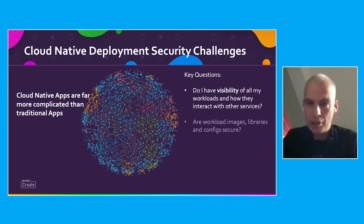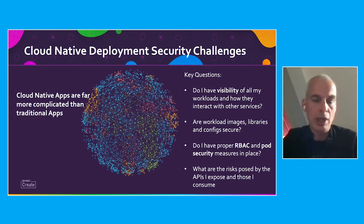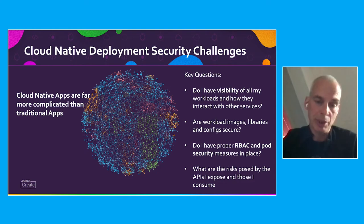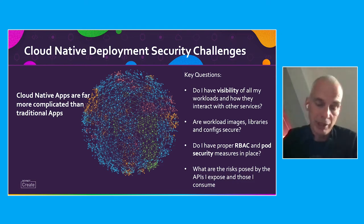It is much harder to understand what the call flow of an application is, which component calls what other components, and where the vulnerabilities in such applications might be. So the key questions we need to ask ourselves when building cloud native applications are: do I have visibility of all my workloads? Do I understand which container communicates with what other container? Do I understand where my dependencies are, and when my application calls external services? Given that I now have many more attack surfaces — very many operating systems, containers, their deployments, many more libraries, image layers, and configurations —